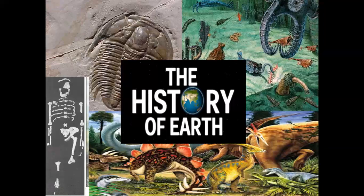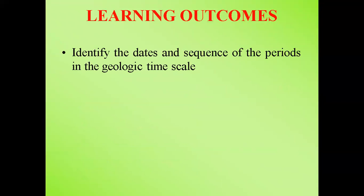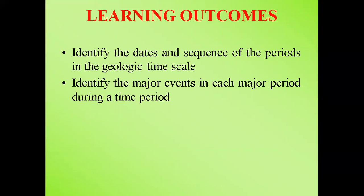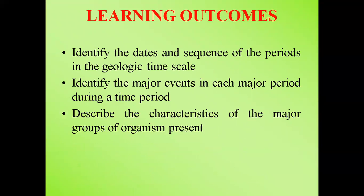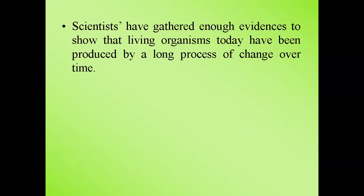Based on countless scientific investigations and discoveries, scientists struggle to trace back the history of the earth — it was difficult because there were no humans during that time. They observe, study, and experiment with evidences that remain today. In this module, we will identify the dates and sequence of the periods in the geologic time scale, identify the major events in each period, and describe the characteristics of the major groups of organisms present during that time.